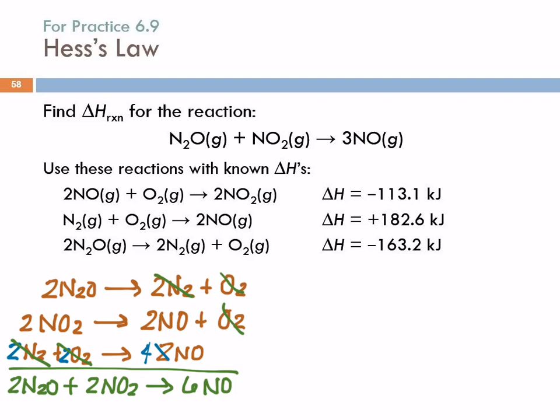So this reaction, two N₂O equals two N₂ plus O₂. That's this one on the bottom. Did I do anything to it? Did I reverse it or multiply it or anything? No, I didn't. So its ΔH is the same. Minus 163.2 kilojoules. How about this one? That's the first reaction, right? But what did I do to it? I reversed it. So that means when I write it this way, I need to change the sign. So ΔH, as I wrote it here, is going to be plus 113.1 kilojoules. Because I'm writing it backwards.